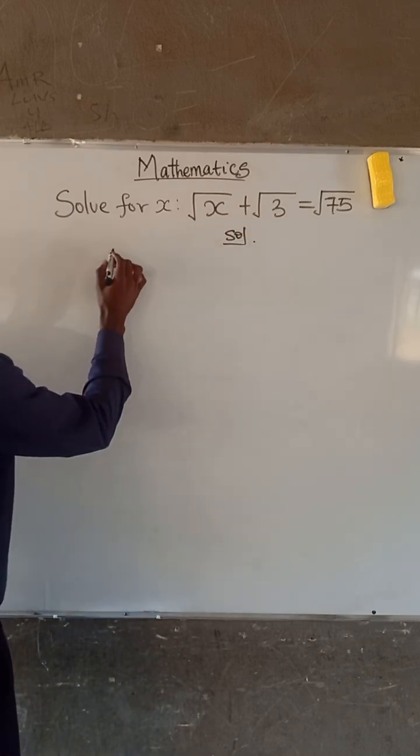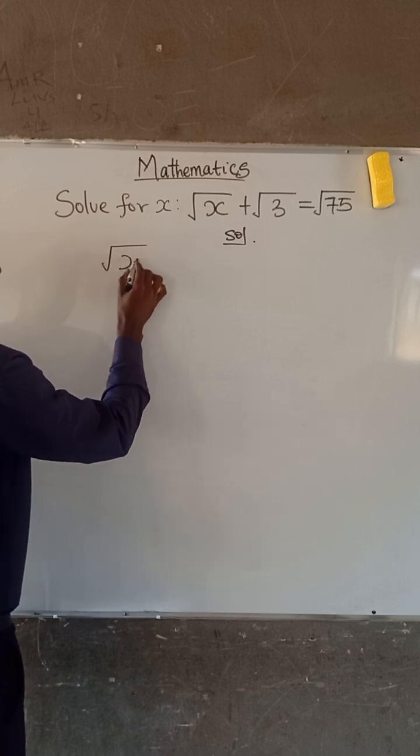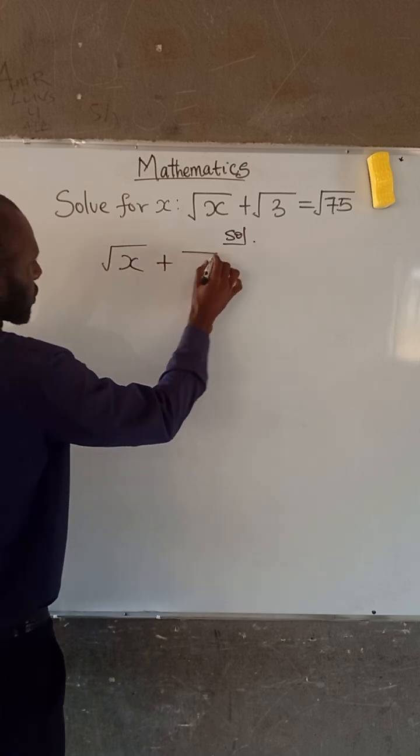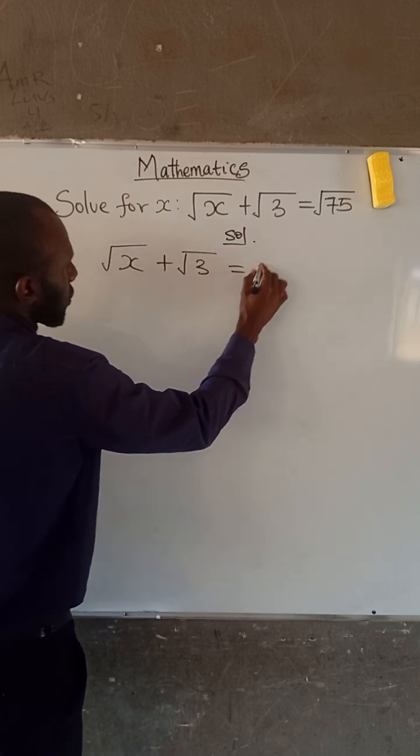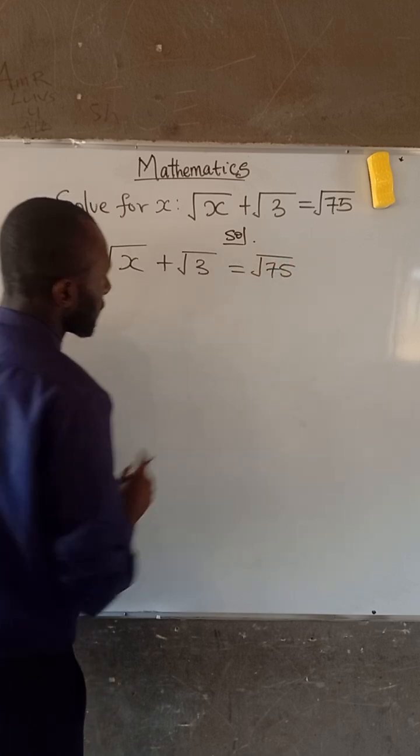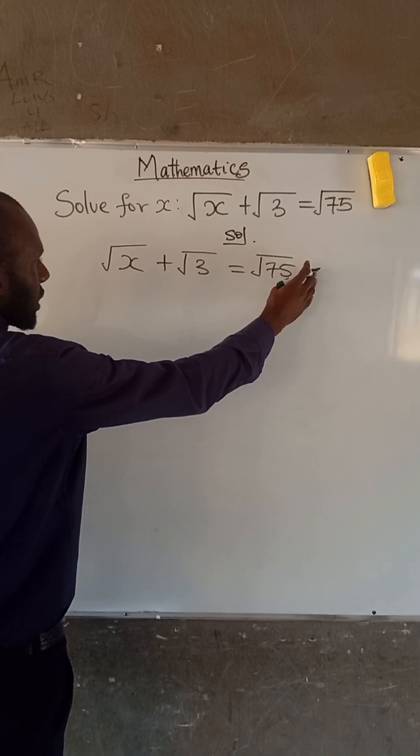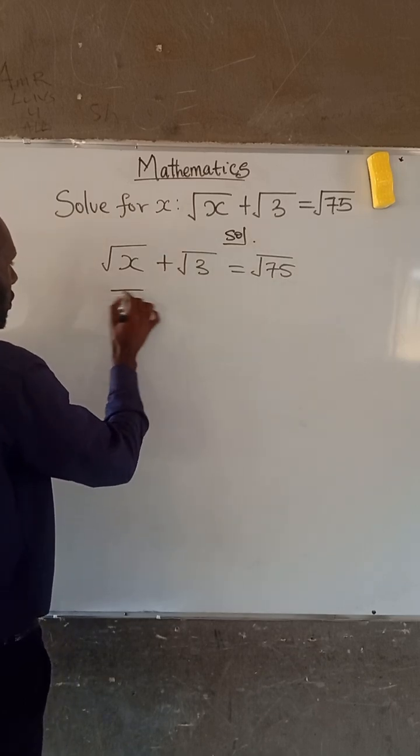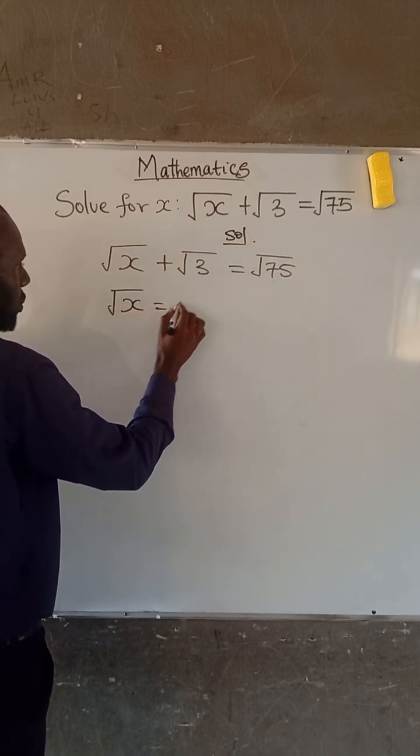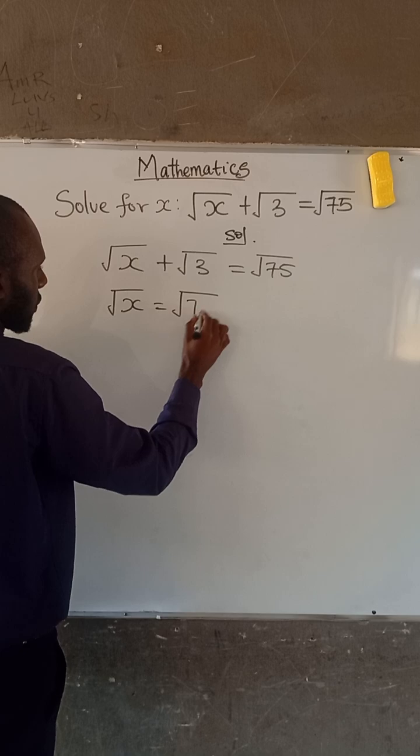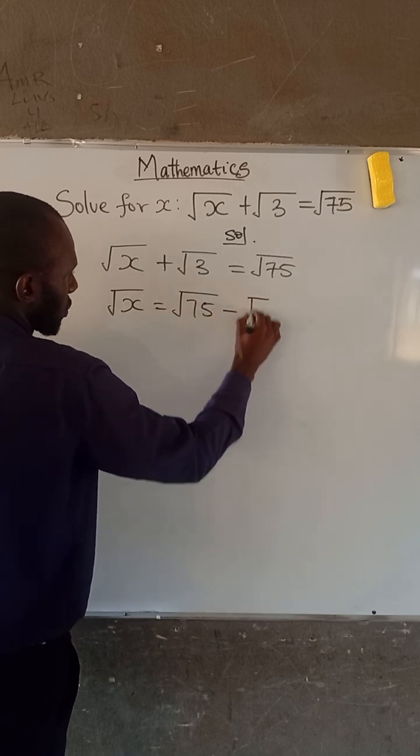So we are given that root x plus root 3 is equal to root 75. The first thing we do here is move root 3 to the right-hand side. So we have root x equal to root 75 minus root 3.